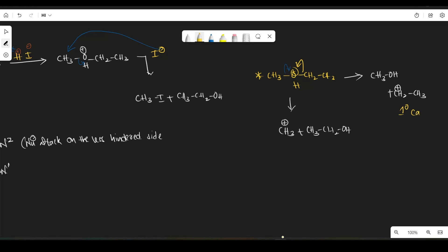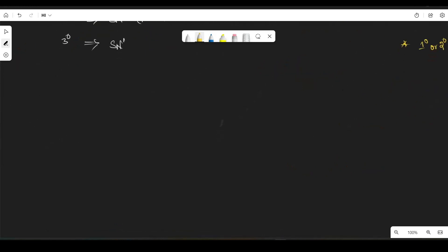So that's what I am telling, in case of primary or secondary carbocation formation takes place, we need to see which one. We need to write the product according to SN2. So now let me tell you the example for SN1.